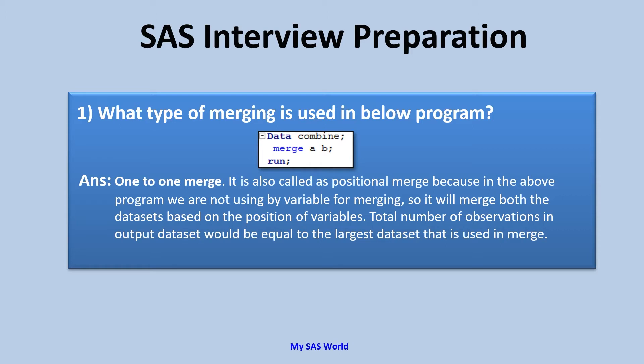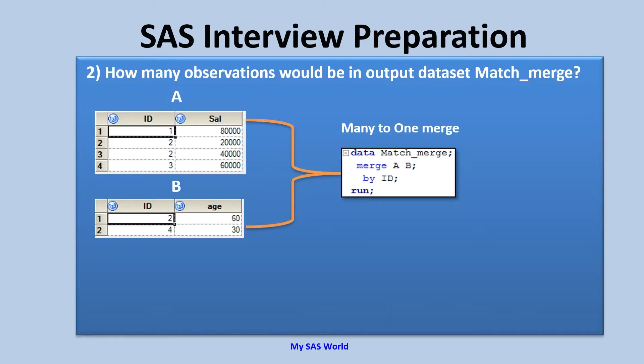It will merge both data sets based on the position of variables. The total number of observations in the output data set would be equal to the largest data set used in the merge. If you remember from the previous video, we used multiple SET statements to combine data, and there the total number of observations were equal to the lowest observation count. But here it equals the largest number of observations in the data sets.